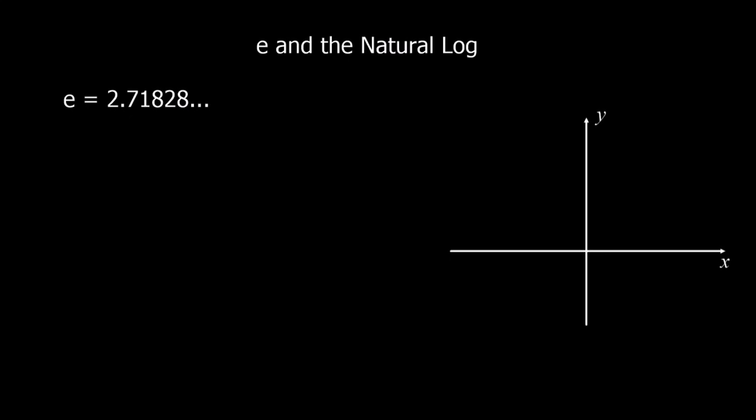This video is about the exponential function e and the natural log ln. e is just a number — it is 2.71828 and so on. It's an irrational number, so it goes on forever.